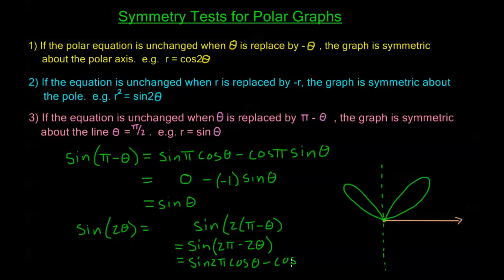which equals sine 2 pi cosine 2 theta minus cosine 2 pi sine 2 theta. But here, I still get 0 in this first term, but I have minus, cosine 2 pi is 1, so this is negative sine 2 theta.